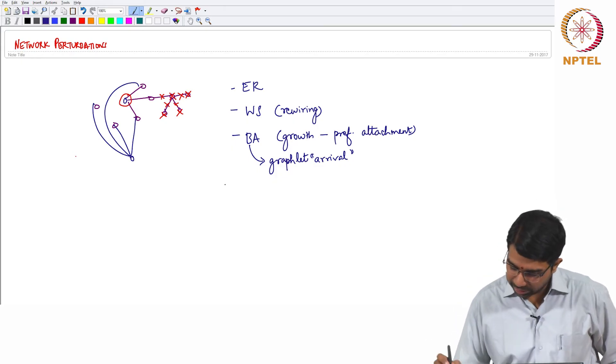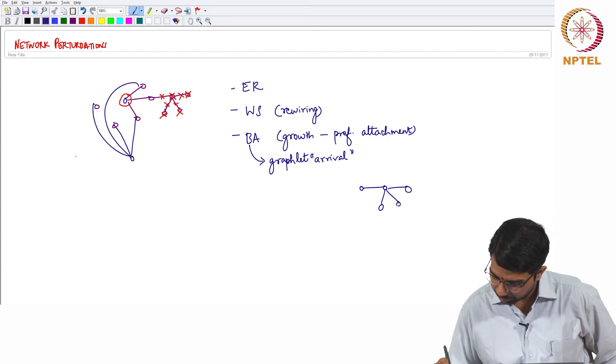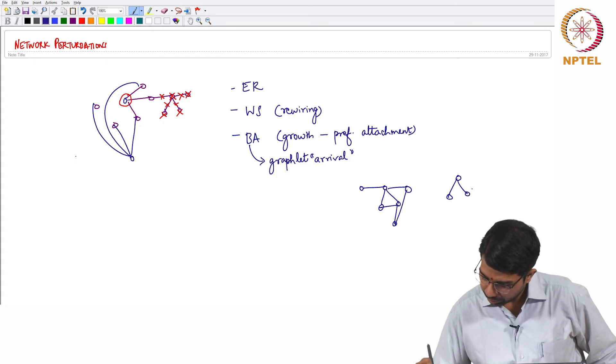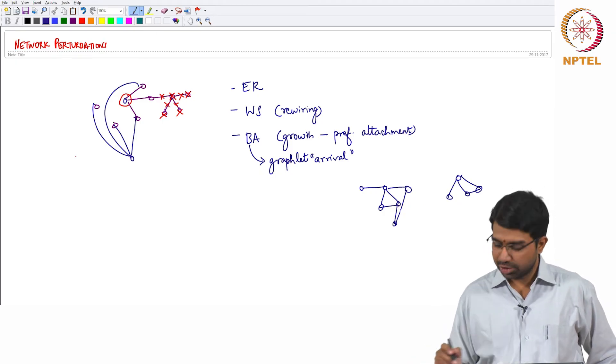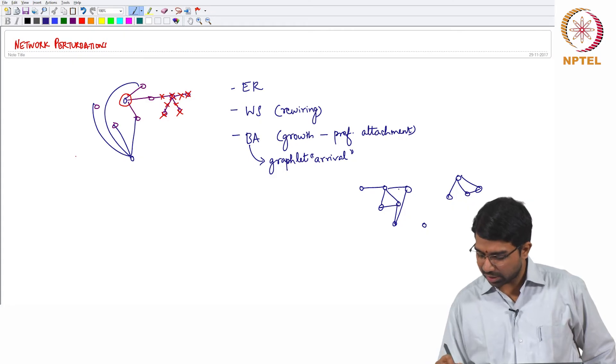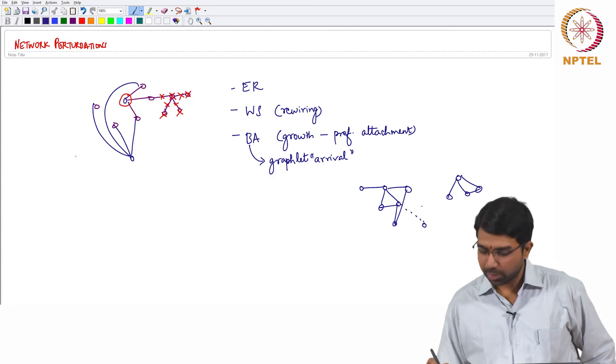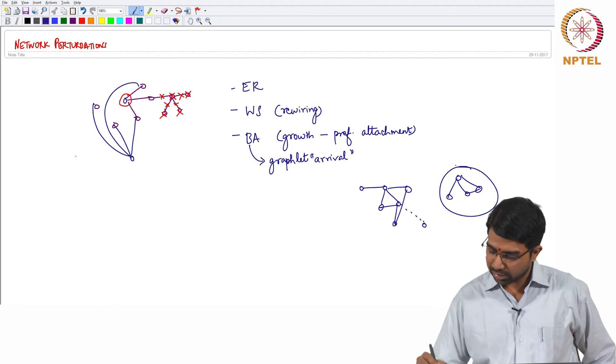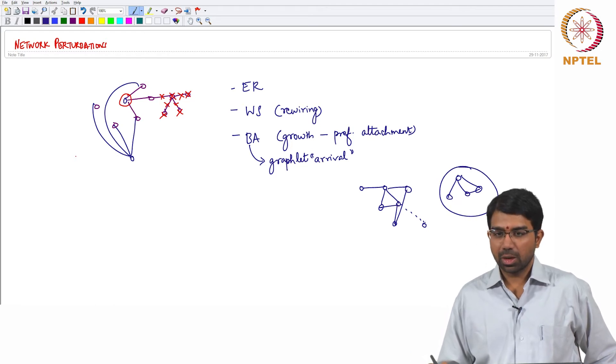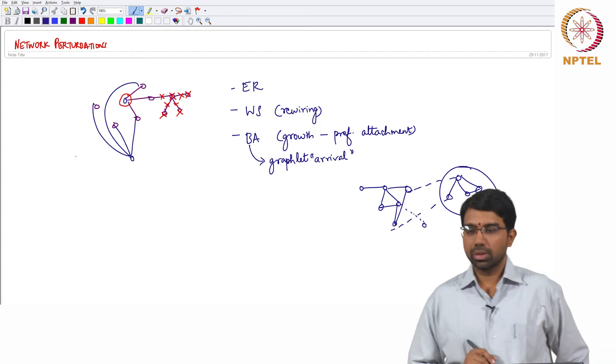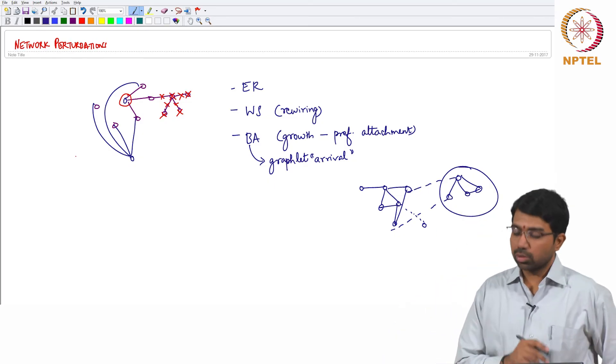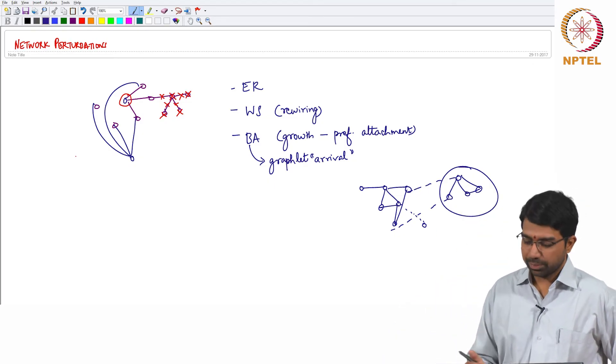So this basically means that you have some existing network, and this is the network that arrives. It's not a single edge. Instead you have this graphlet or this subgraph arriving. So now this might connect in different ways. So this could be potentially another network growth model.